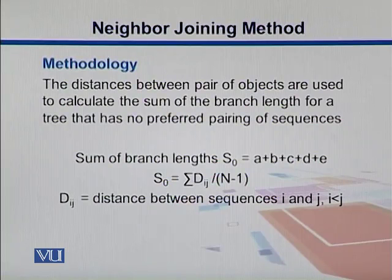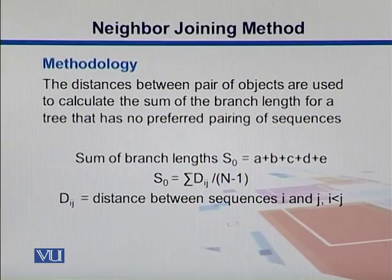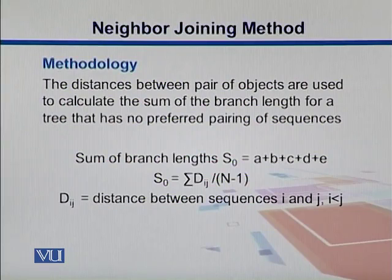This S0 can be correlated with the distances between different sequences with this equation. The distance Dij is between the sequences I and J, such that I is less than J.